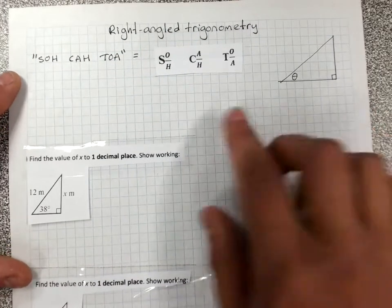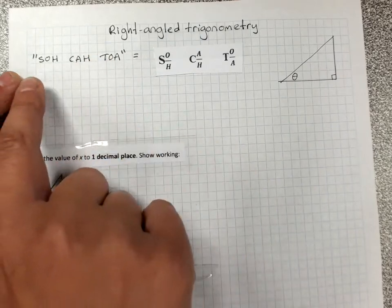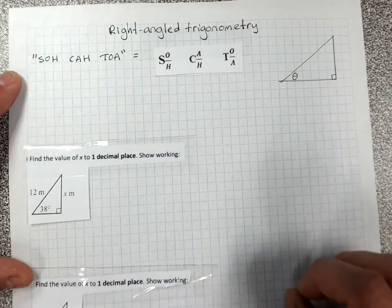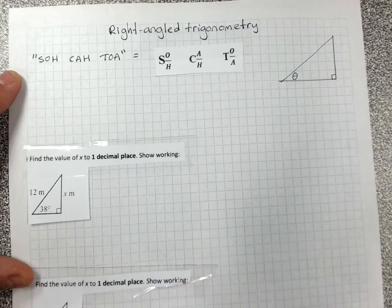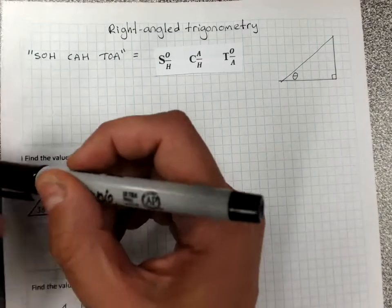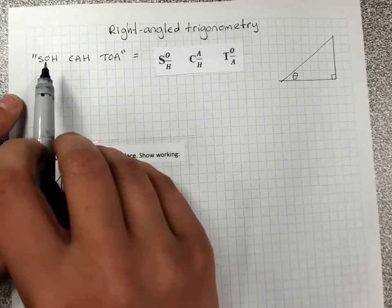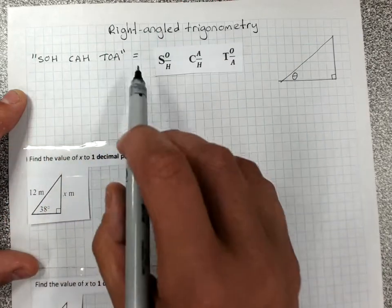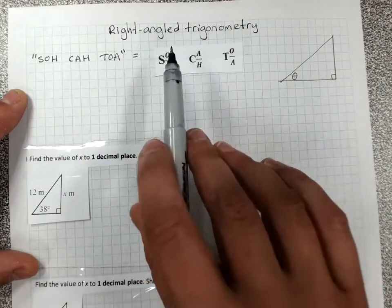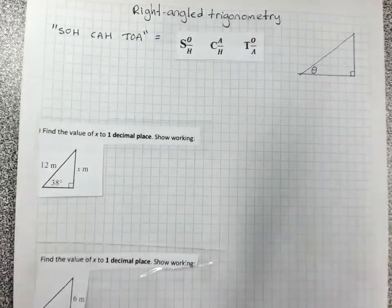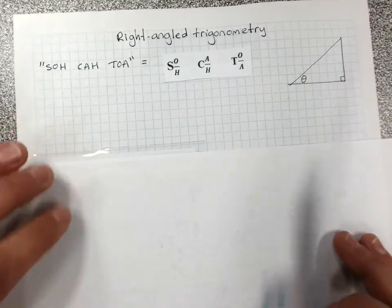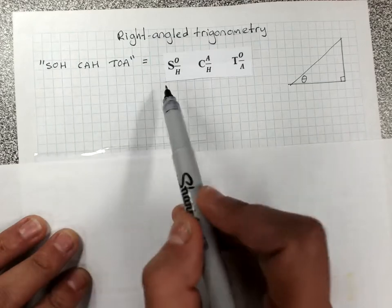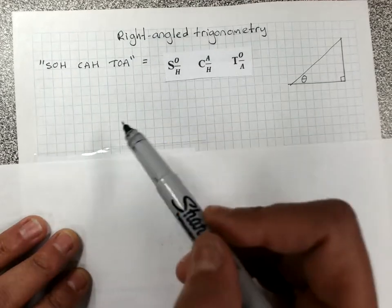So I'm going to start by reminding you about SOH CAH TOA. SOH CAH TOA, and here it is written a different way, is how to remember the three trig formulas that we might need. And it's a really good idea at the start of a test to write down SOH CAH TOA, or if it's given to you on the test, to look at it. And before we even look at the questions, hide the questions, we'll write down the three trig formulas so that they're there in front of us to remember we're going to have to use these.